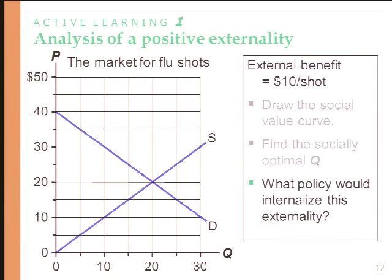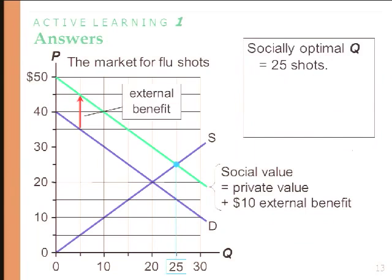With a $10 subsidy for every quantity moving through the market, instead of the socially optimal number of flu shots being 20 — which would be the private equilibrium — we recognize the external benefit, the social value shifts upward, the willingness to pay shifts upward, and we find the social equilibrium is 25 shots, not 20. All we have to do is offer a subsidy of $10, and everybody that comes into the vaccination center gets a shot and $10. We get to the social optimum.